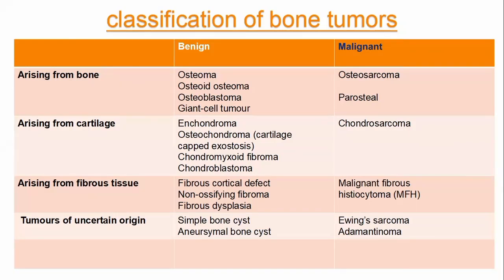For those arising from bone, in the benign form we have osteoma, osteoblastoma, and the giant cell tumor. In their malignant form, we have osteosarcoma and the parosteal variant.